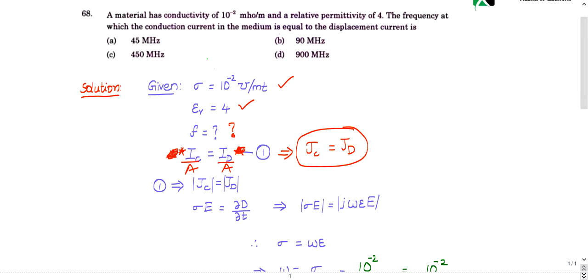jc is equal to jd means their magnitudes are equal then only it is possible. So their magnitudes are equal. jc is given by sigma e. This is a magnitude here also magnitude. The formula for jc is sigma e. Conduction current density is given by sigma e.